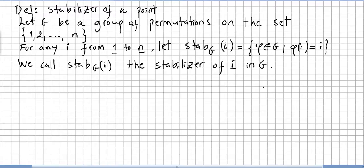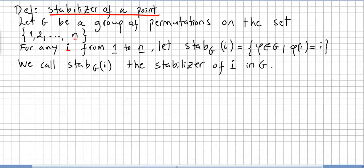In this video we introduce some applications of cosets to permutation groups. We begin with the definition of what a stabilizer of a point is. Let g be a group of permutations on a given set with elements 1, 2 to n. For any i from 1 to n, let the stabilizer of i in g be the set of phi in g such that phi of i equals i. We call this the stabilizer of i in g.